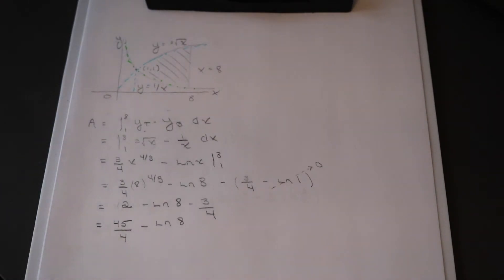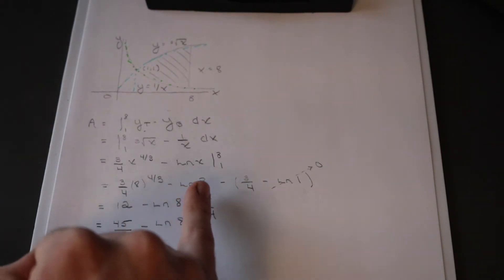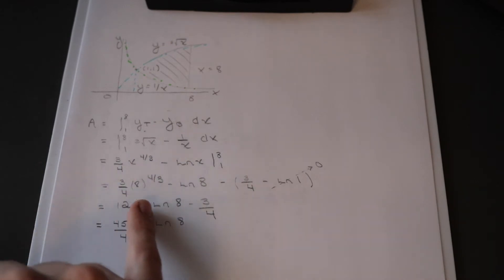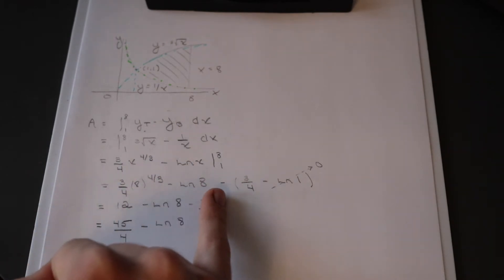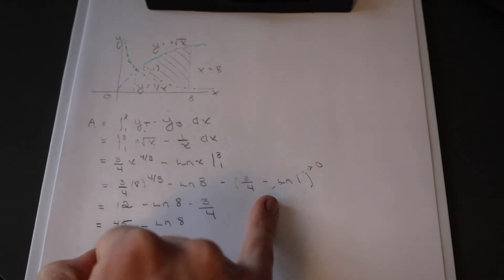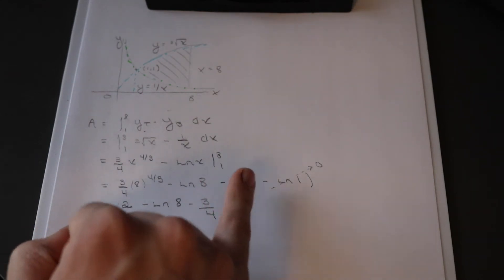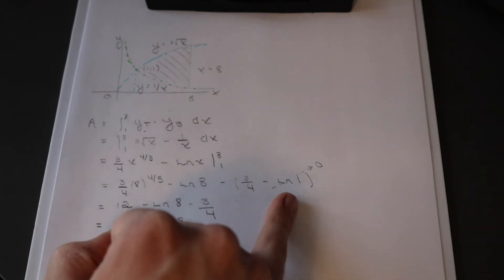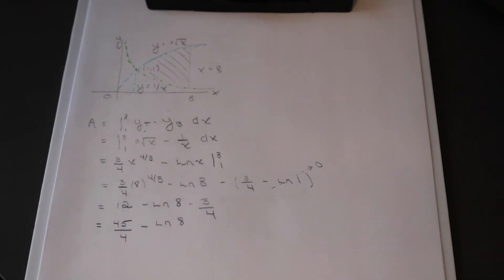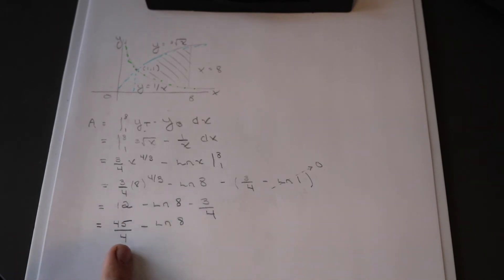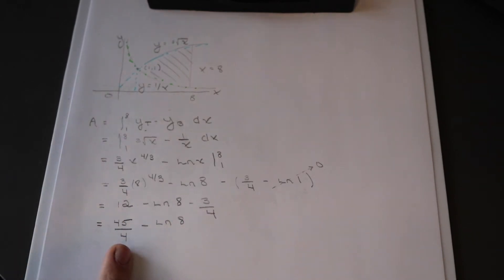Once we have that, we plug in 8 as our first value, then subtract the result when we substitute in 1. We get 3/4 minus ln(1), and since ln(1) = 0, that term drops out. Then you simplify from there, and that gives you the answer for that first curve.